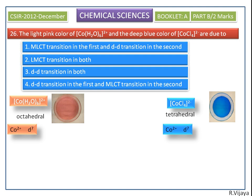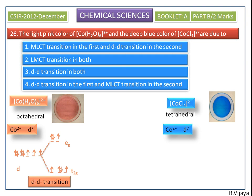First, we discuss the octahedral structure of the hex aqua cobalt(II) complex. Because of this octahedral geometry, the d orbitals are split into t2g and eg orbitals. We can see the electron arrangement in the t2g and eg orbitals. During transition, the electron is excited from the t2g orbital into the eg orbital without changing the spin direction — that is, it follows a d-d transition by spin-allowed transition.